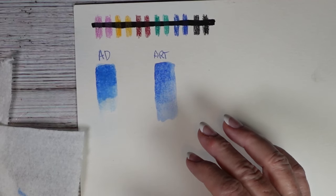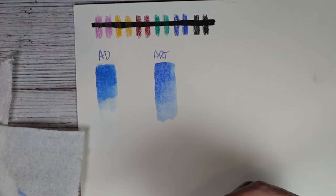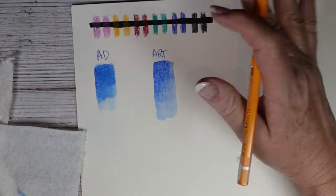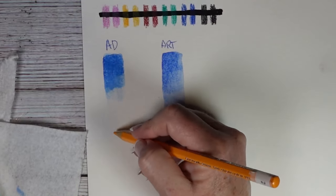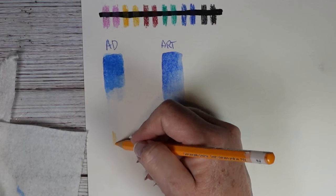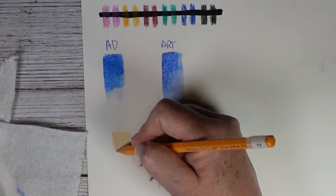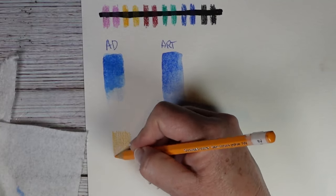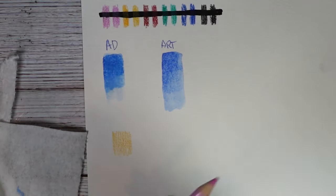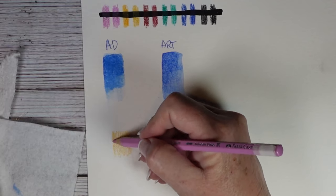And let's try to layer. We're going to layer this orangey color and our pink color. We're going to layer them dry.